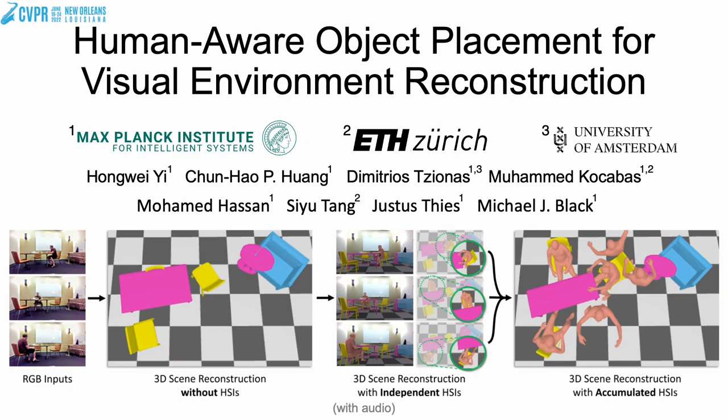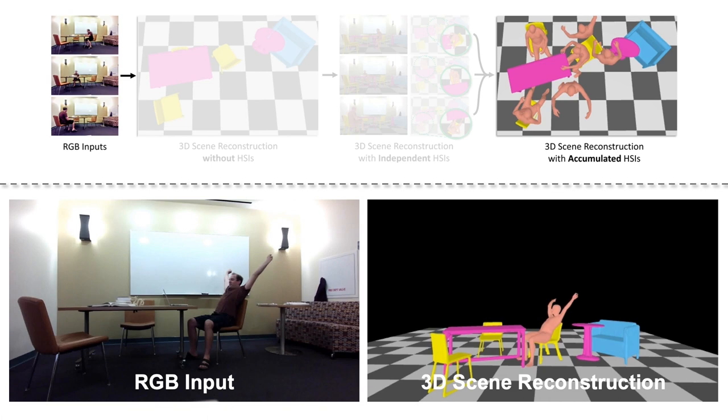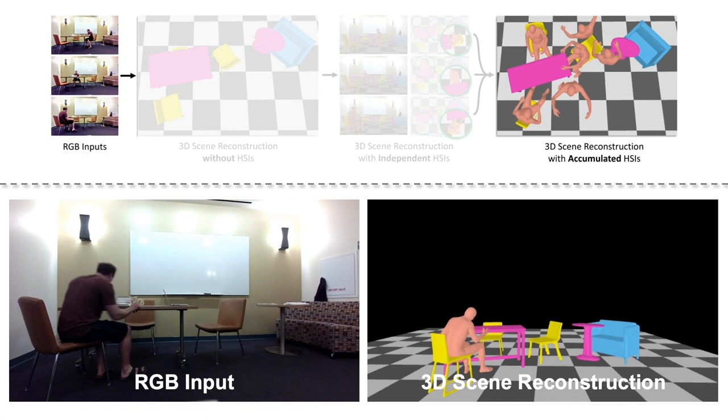We present Human-Aware Object Placement for Visual Environment Reconstruction. In this work, we reconstruct a 3D scene that best affords humans interacting with it from images of a single color camera.